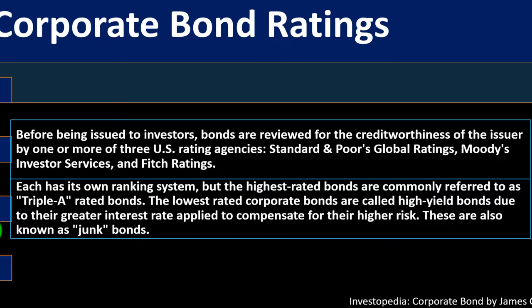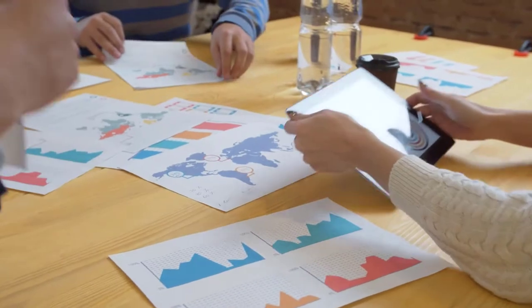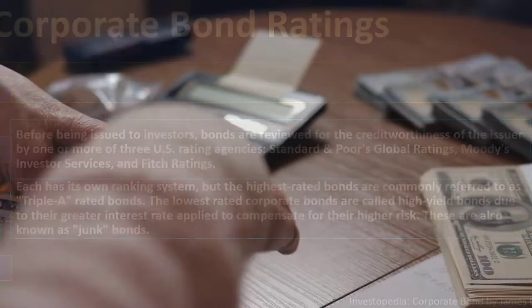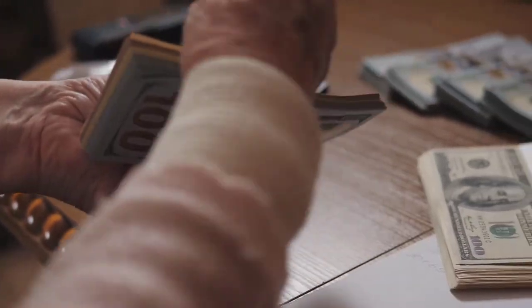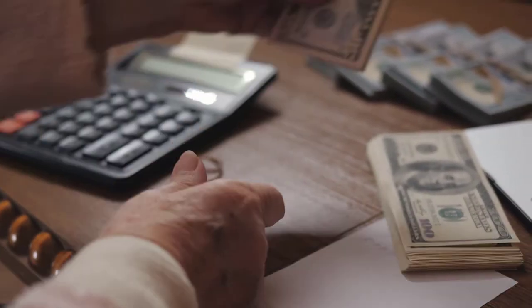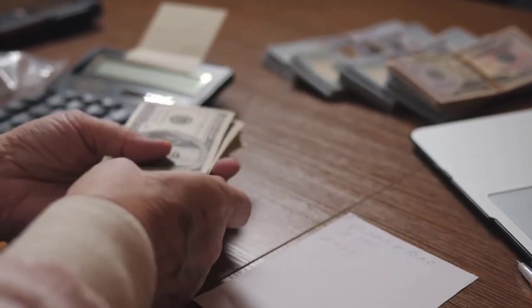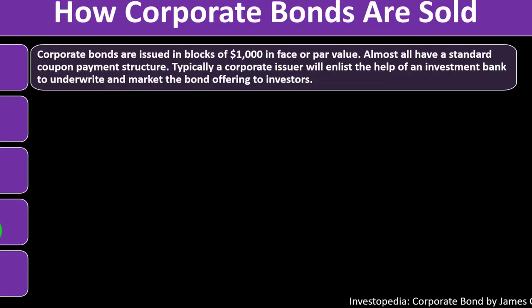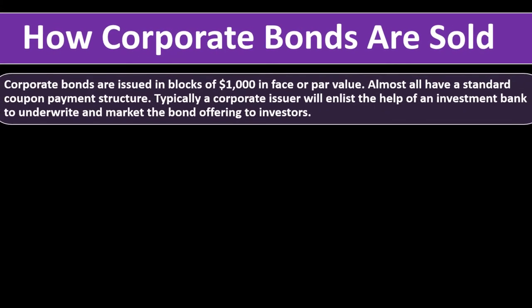The lowest rated corporate bonds are called high yield bonds due to the greater interest rate applied to compensate for their higher risk — these are also known as junk bonds. It's a somewhat disparaging term, but if you're a smaller company issuing bonds you have to offer a higher rate of return because you're more likely to go bankrupt than large established companies. Bond ratings are vital to alerting investors to the quality and stability of the bond, and consequently greatly influence interest rates, investment appetite, and bond pricing.